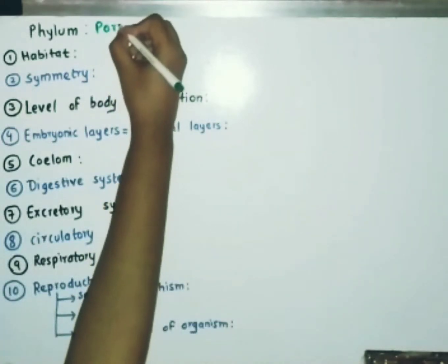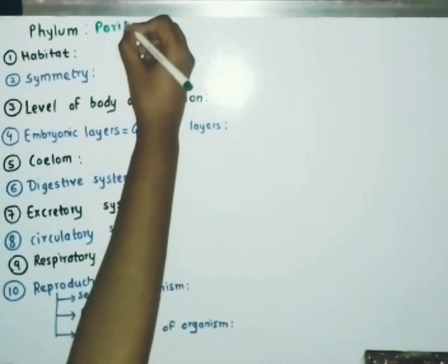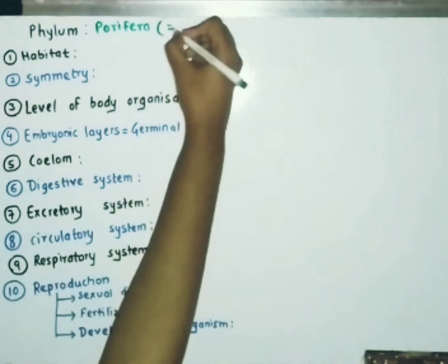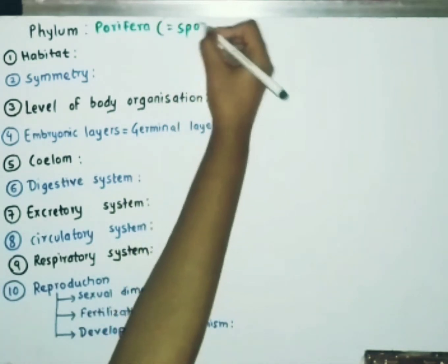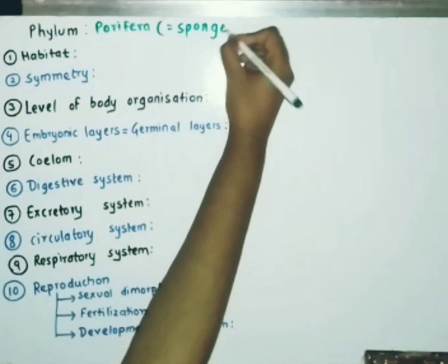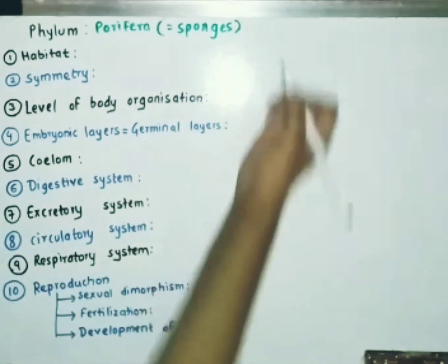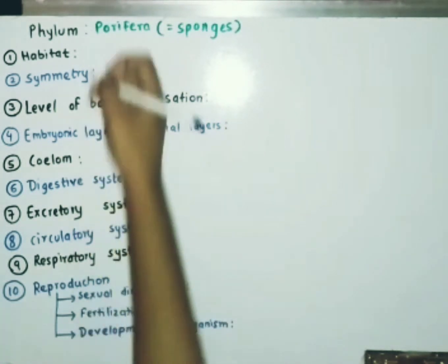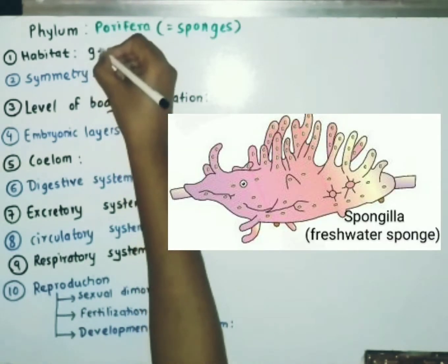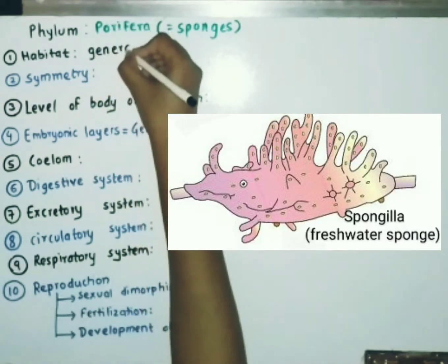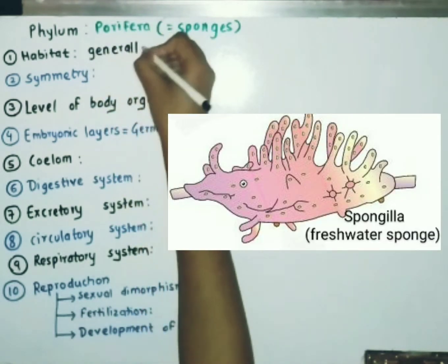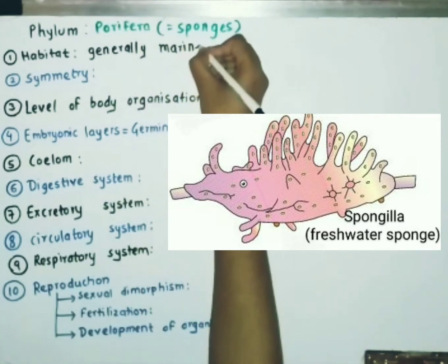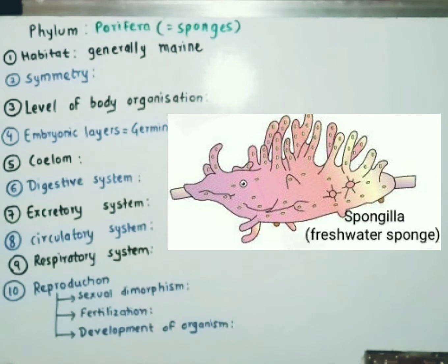In this video, we are going to study about Phylum Porifera of Animal Kingdom, which is mostly known as sponges. Sponges are generally marine but they can be found in freshwater also. For example, Spongilla is a freshwater sponge.